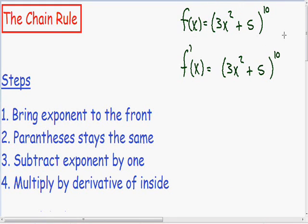So I wrote for you all the steps for taking the derivative on the left hand side. The first step for taking the derivative using the chain rule is we want to bring the exponent to the front. It's the same as the power rule. So we want to take this exponent of 10 and bring it to the front and multiply it.